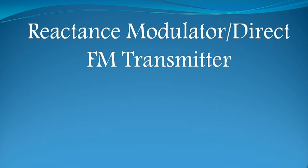In today's video, we are going to see in detail about the reactance modulator FM transmitter, or direct FM transmitter. The definition of FM indicates that modulation occurs when the carrier signal characteristics superimpose with the amplitude of the message signal. In FM, the amplitude of the carrier signal is constant but the carrier frequency varies continuously in accordance with the instantaneous amplitude of the message signal. Now let us see what blocks are involved in order to generate an FM signal.